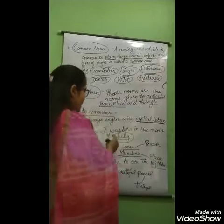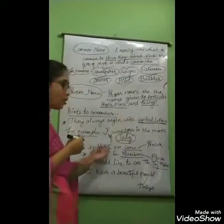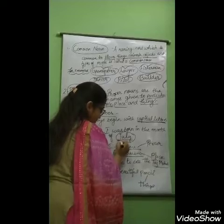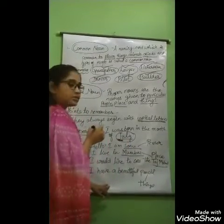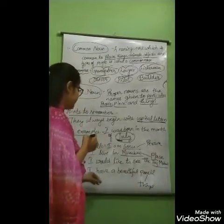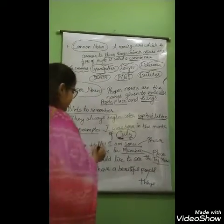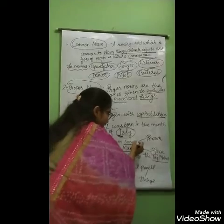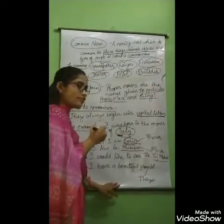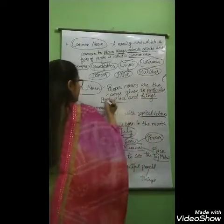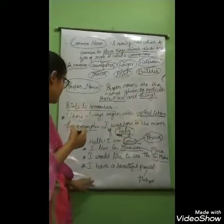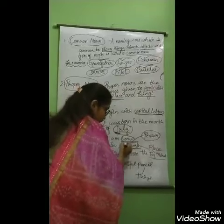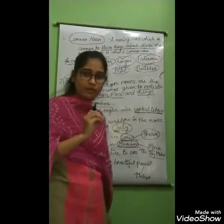For example: I was born in the month of July. Look at the J — it is written in a capital letter, and it denotes the month. Second example: Hello, I am Sonu. Sonu is the name of a particular person. Third example: I live in Mumbai. Mumbai is an example of a particular place.